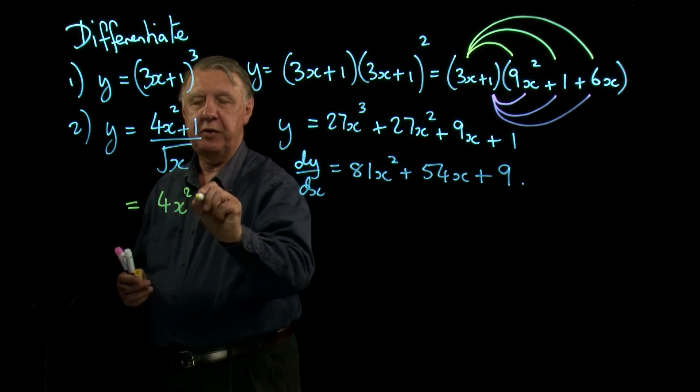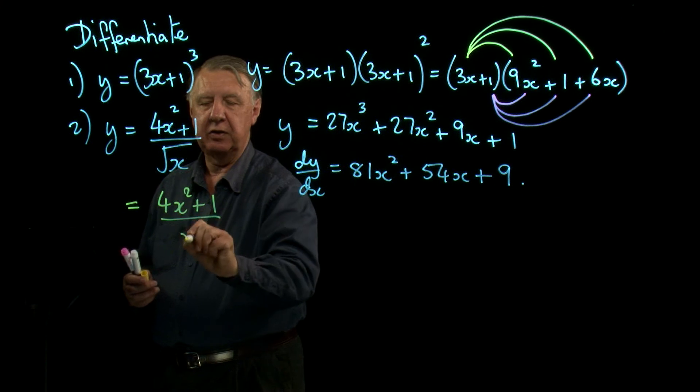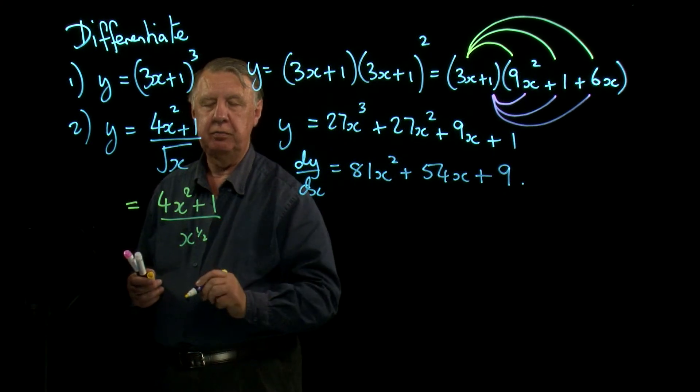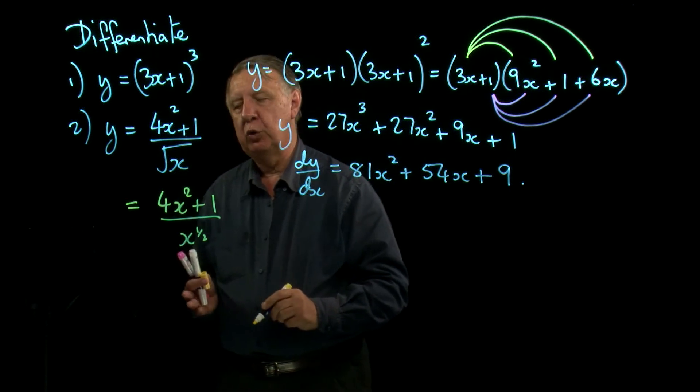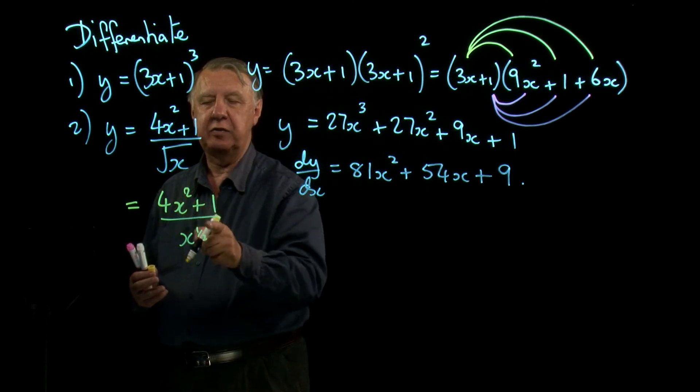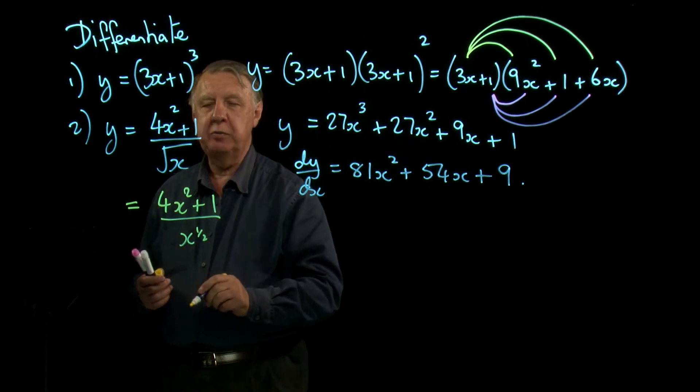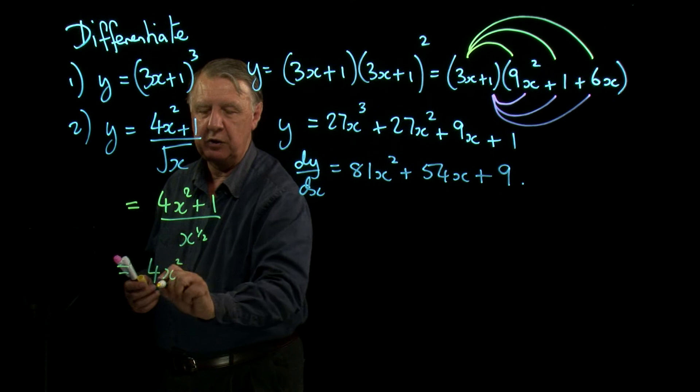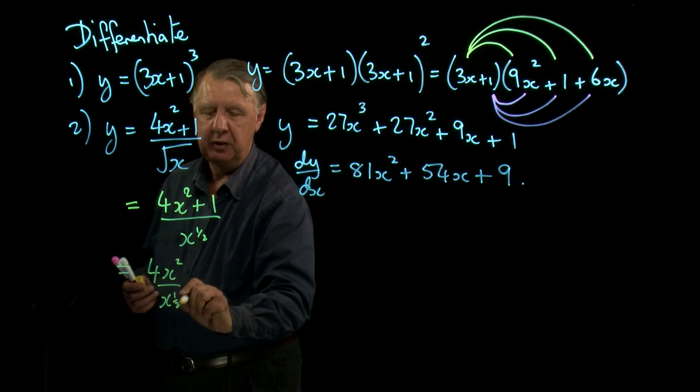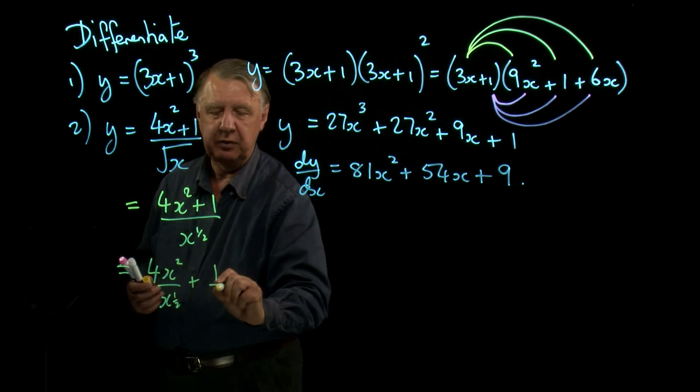Well you can do that by first of all writing root x as x to the half. And then you can remember a basic rule of fractions that if you've got two things added together over a single item, then you can break that down. So you can write that as 4x squared over x to the half and 1 over x to the half.